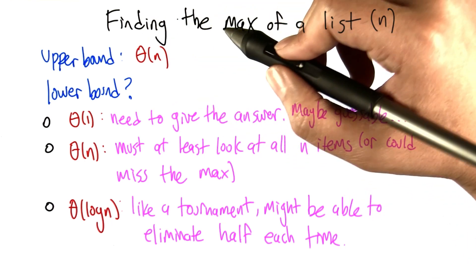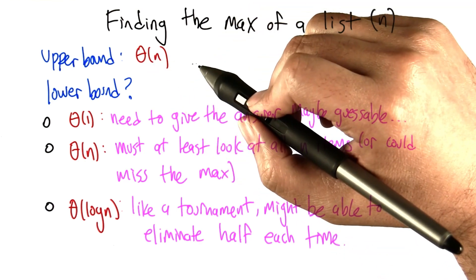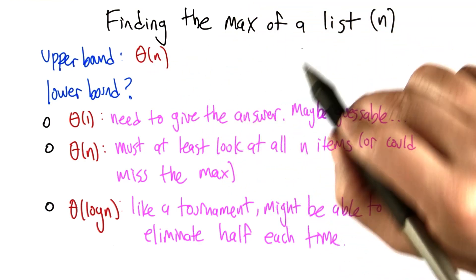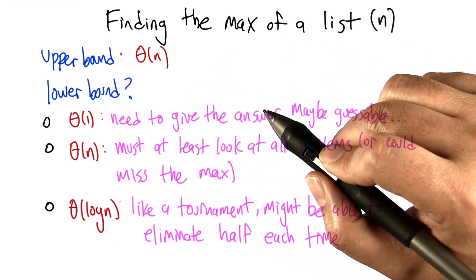Imagine that we're trying to compute the max of a list of length n. Now we know an upper bound on this problem is big theta n, because we can just loop through all the elements in the list and find the maximum. But how do we argue about a lower bound for this problem?